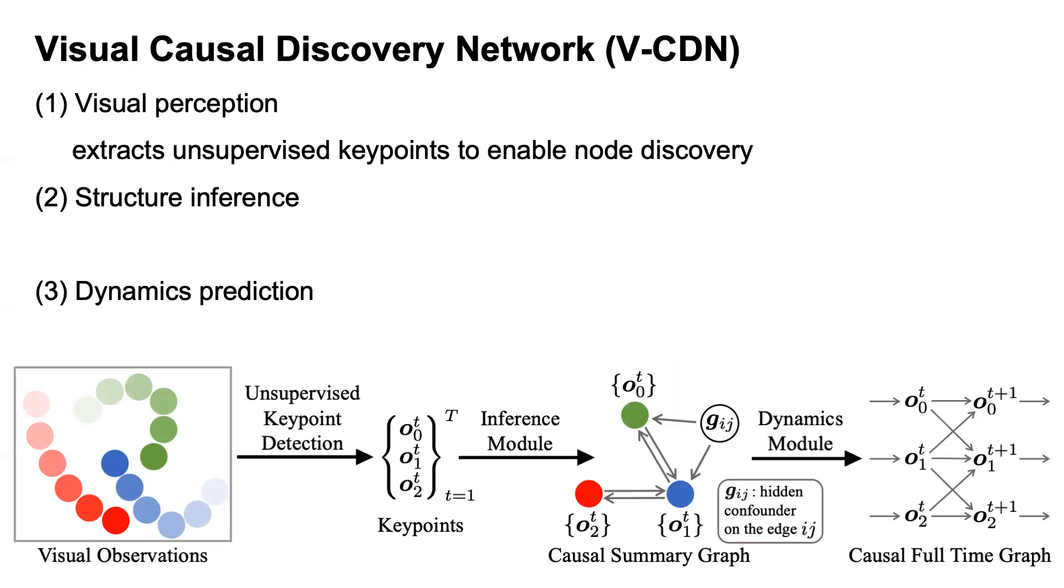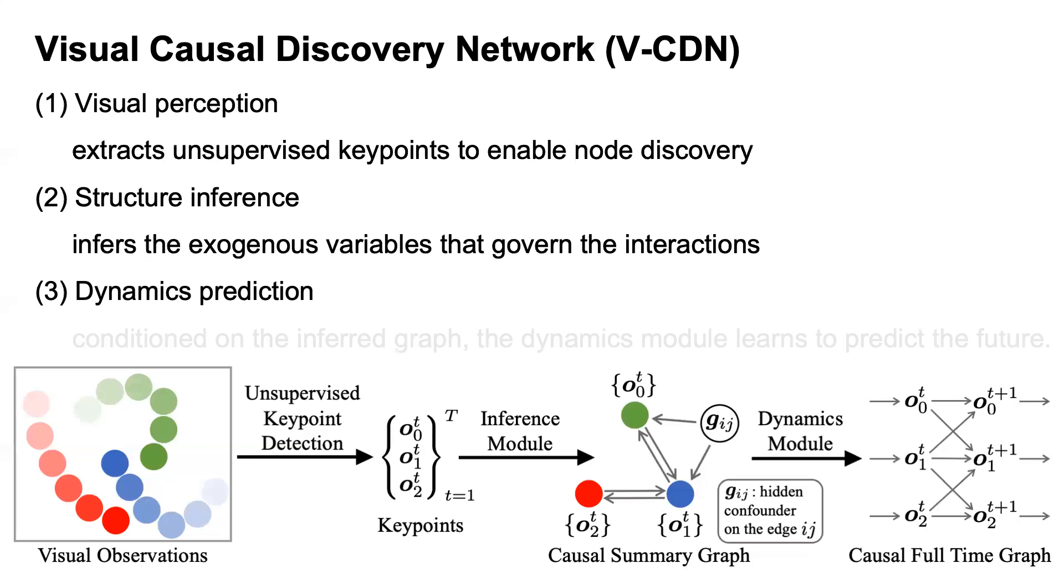Specifically, we train the perception module that extracts unsupervised key points from the images to enable node discovery. The inference module then infers the existence of the edges and the exogenous variables that govern the interactions between each pair of key points using graph neural networks.